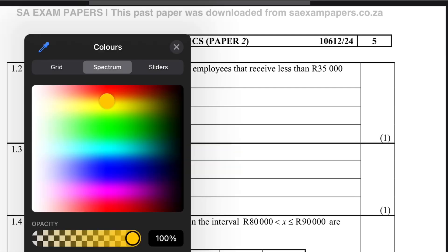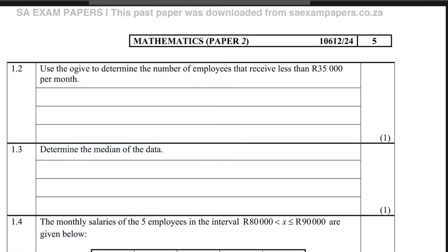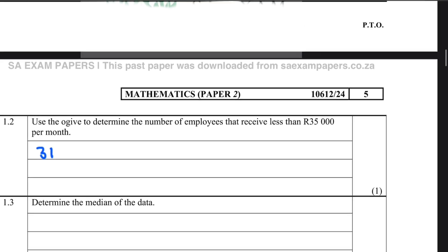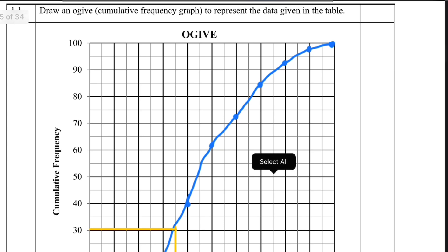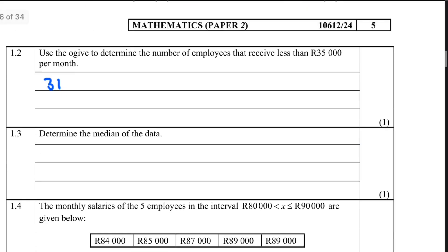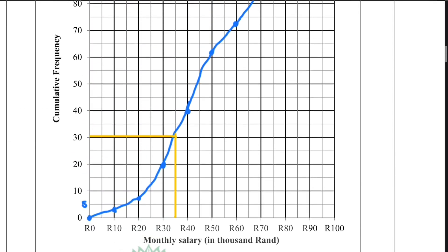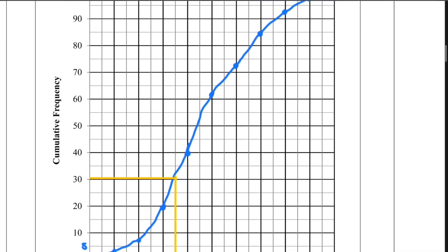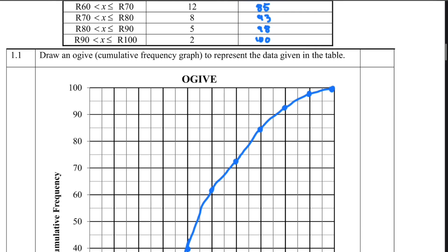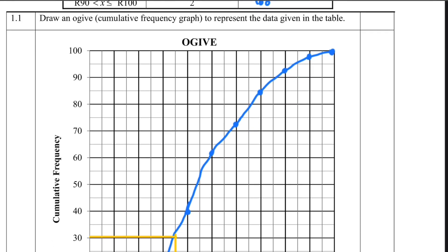I'm slightly above 30 so I'll go with 31. The number of employees that receive less than 35,000 is approximately 31, though 29 or 30 would also be acceptable depending on how you drew your graph. And if we were looking for the number of employees earning more than 35,000, we would calculate 100 minus 30, which gives us 70.